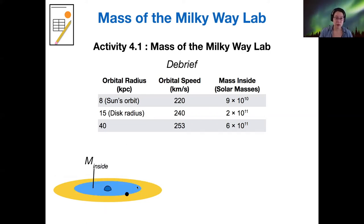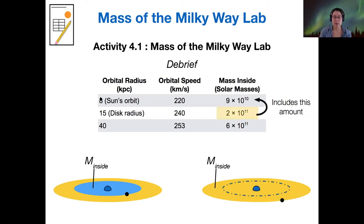And when we look at calculating the mass using the equation, we're only calculating the mass that's inside that object's orbit. So therefore, if you're looking at, for example, the sun, then you're only going to be measuring the mass inside eight kiloparsec radius. So that's not the whole mass of the disk, of course. And so we need to go out to the 15 kiloparsec radius in order to capture the entire disk.